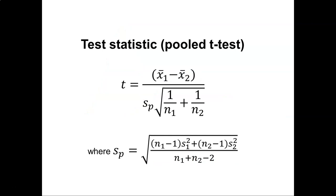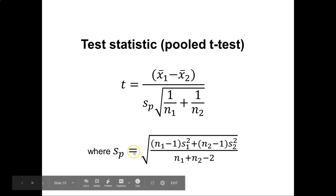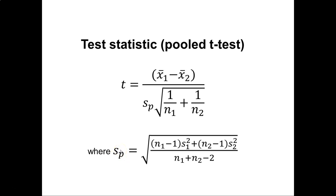And so here's the test statistic we'll use for a pooled t-test, assuming the variances are equal. The major part is that we have a different term, what we call the pooled standard deviation, which we denote S sub p.